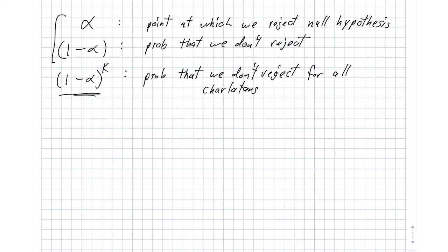And then the final thing is that we want to know what's the probability that we reject at least one charlatan. And when I say the probability that we reject at least one charlatan, what we mean by this is we're rejecting the null hypothesis for that charlatan. So we're accepting that charlatan as a stockbroker. And that's just the complement of what we have just above. So that's 1 minus 1 minus alpha to the K.